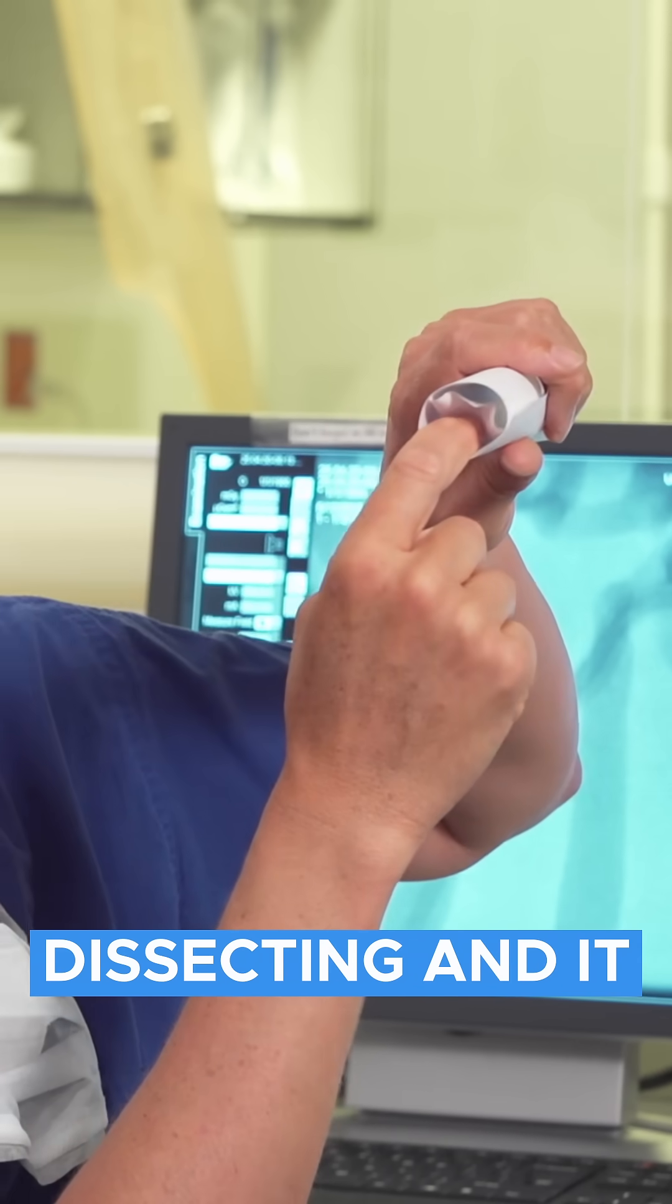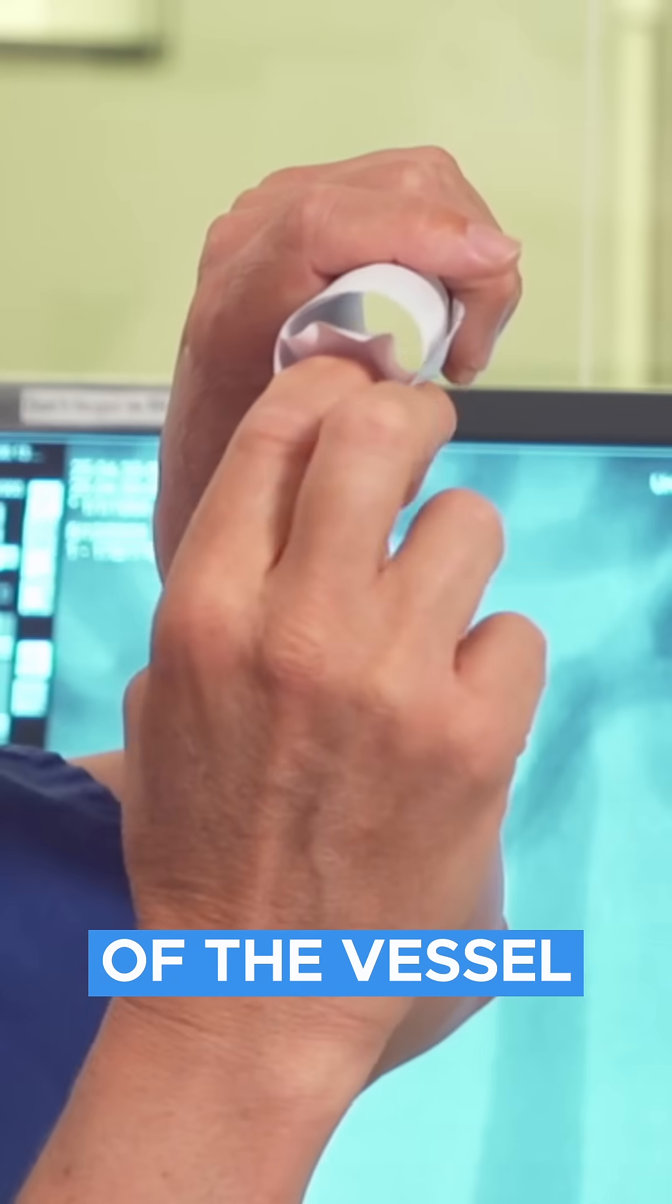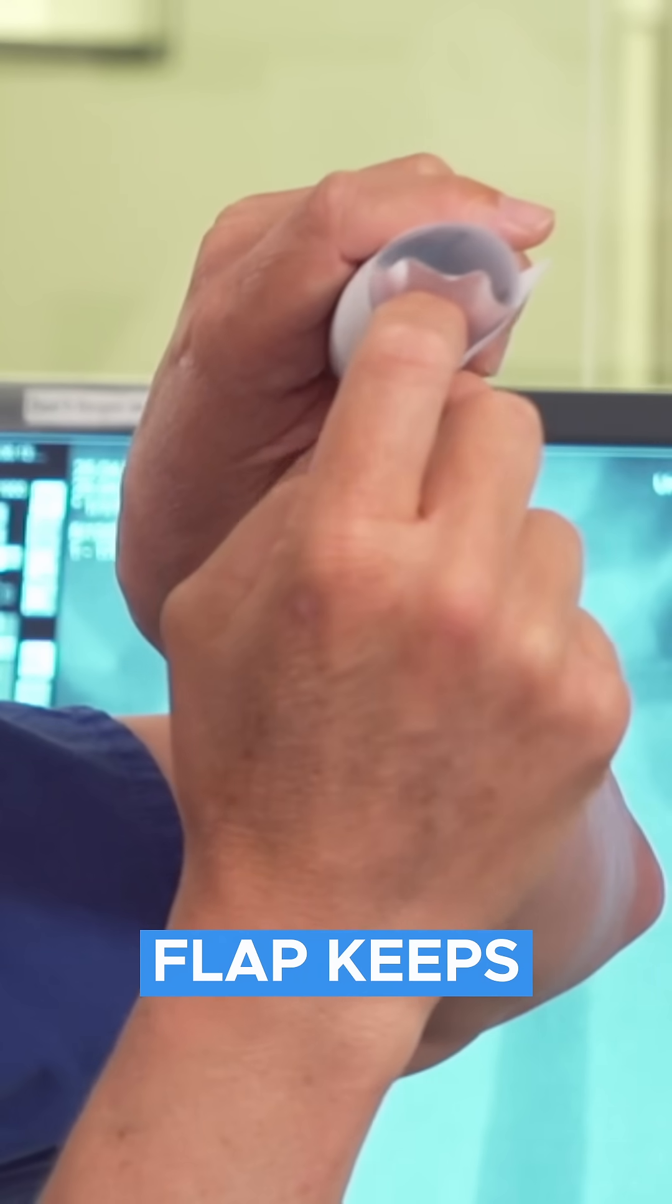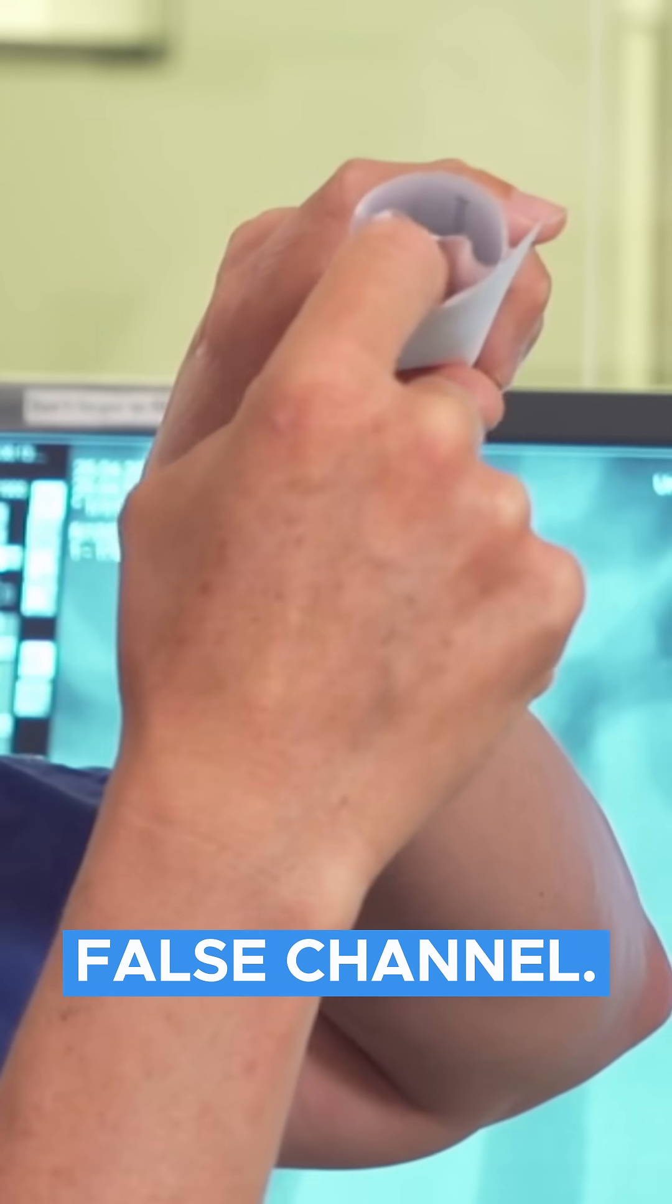It keeps dissecting and it takes the lumen of the vessel and it closes it down. So that little flap keeps closing and closing and you get this false channel.